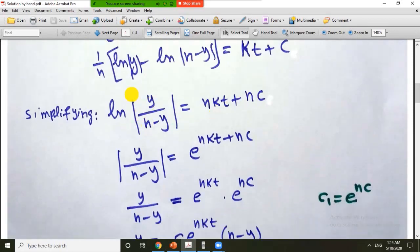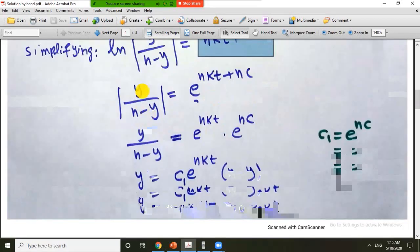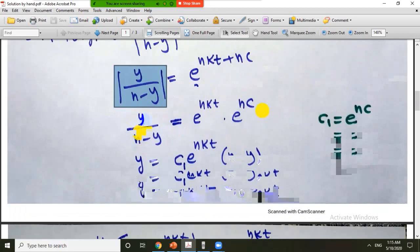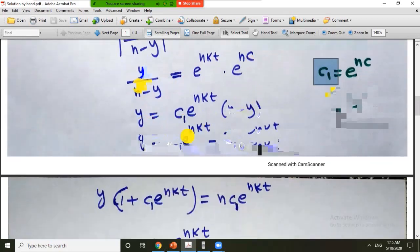To simplify this, natural log of something is equal to this expression. This means that we can write this expression is equal to exponential of something. Or if there is no confusion in the sign, we can write y divided by n minus y is equal to this. And let us write e raised to the power nc equal to c1. So this is the solution.